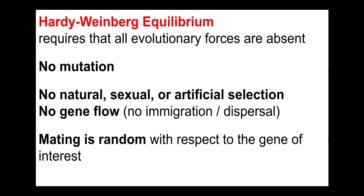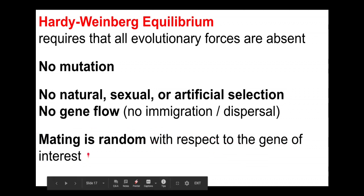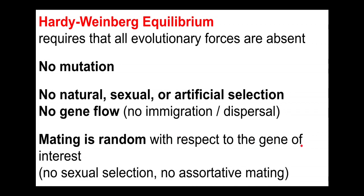This is an important caveat because even though mating is often not random with respect to a certain gene, especially a gene that is not under natural selection, mating might actually more or less be random. Again, random mating in this context means no sexual selection — no assortative mating with respect to the gene of interest.